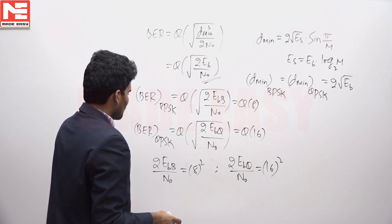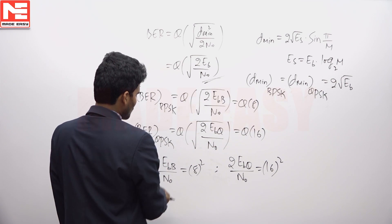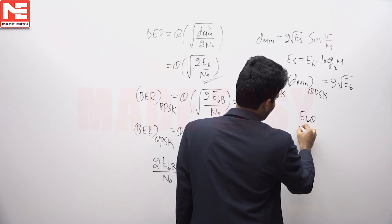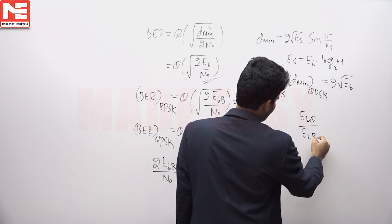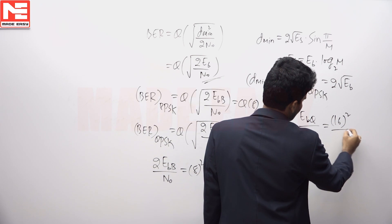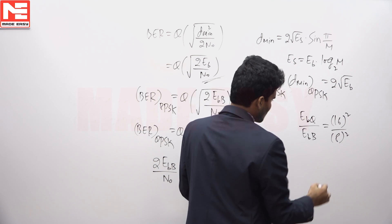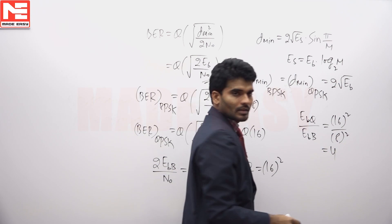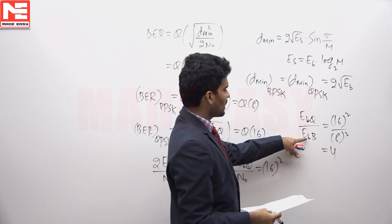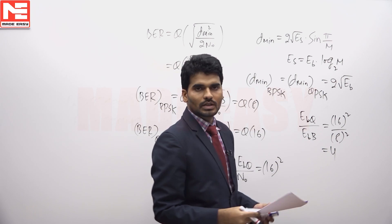From this, if you divide this expression by this expression, 2 by N0 is cancelled. So here EBQ by EBB equals 16 squared by 8 squared, which equals 4. The ratio of average bit energy of QPSK to the average energy of BPSK equals 4.